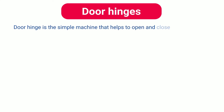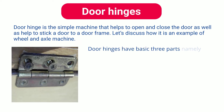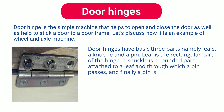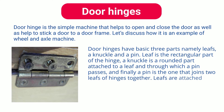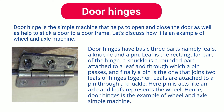Door Hinges. A door hinge is a simple machine that helps to open and close the door as well as helps to stick a door to a door frame. Door hinges have three basic parts: leafs, a knuckle, and a pin. The leaf is the rectangular part of the hinge, a knuckle is a rounded part attached to a leaf through which a pin passes, and the pin joins the two leafs of the hinge together. Here the pin acts like an axle, and the leafs represent the wheel. Hence, door hinges are an example of a wheel and axle simple machine.